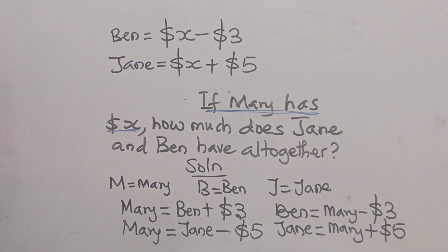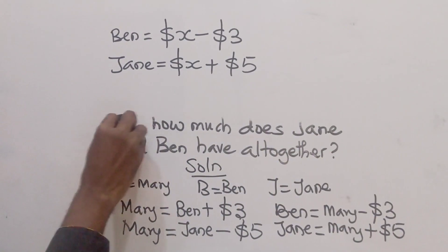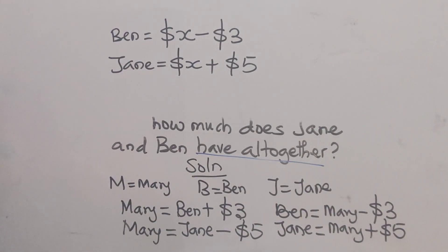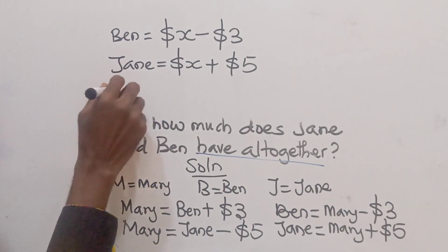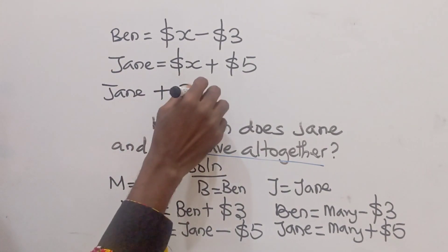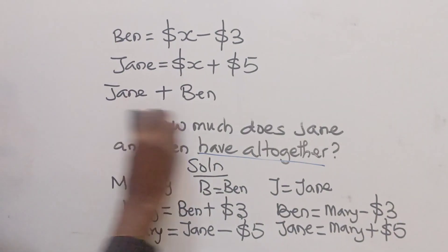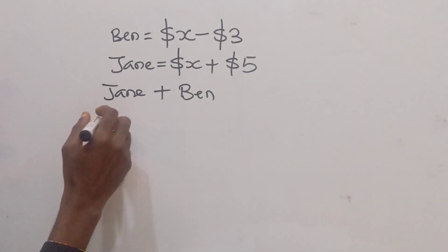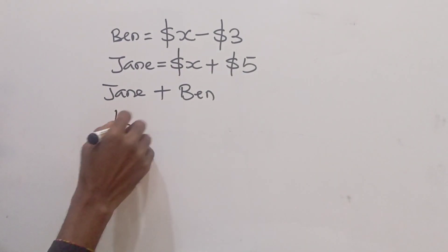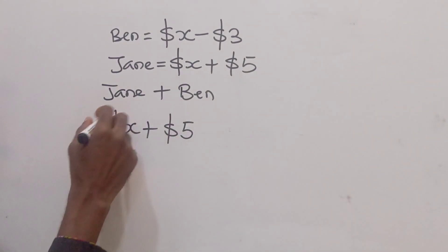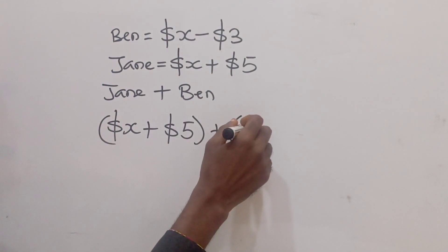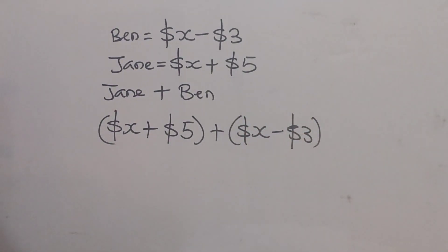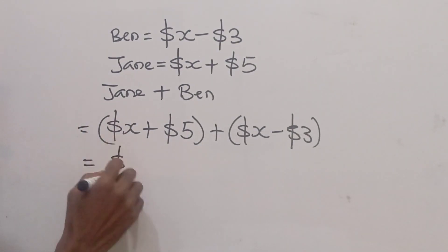Now how much do Jim and Ben have altogether? The phrase 'all together' means we are going to add Jim plus Ben. So let's add them together. Jim is x dollars plus five dollars, plus Ben which is x dollars minus three dollars.